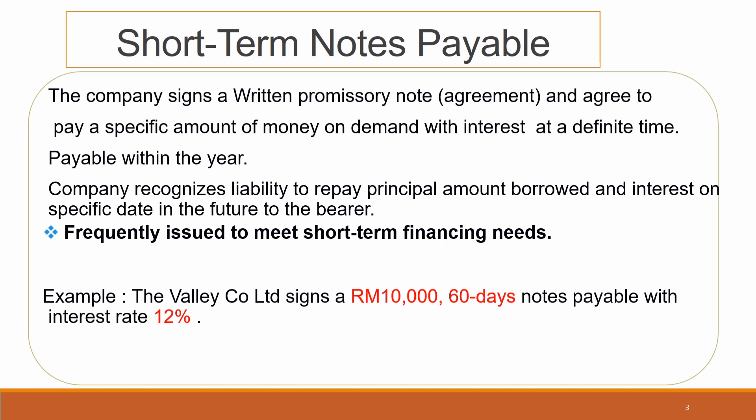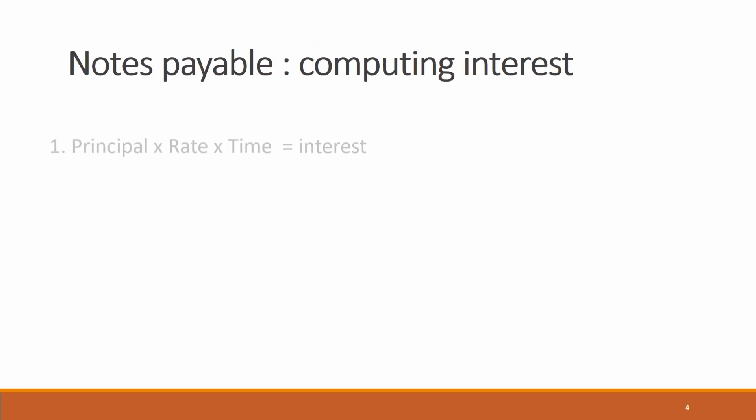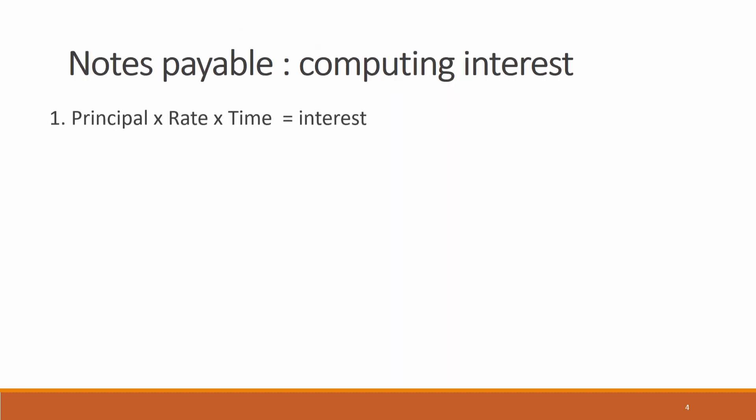Look at the example. The Valley Company Limited signs a RM10,000, 60-day notes payable with an interest rate of 12%. So RM10,000 represents the principal, 60 days is the term, and the rate is 12%. How do you compute interest under notes payable?